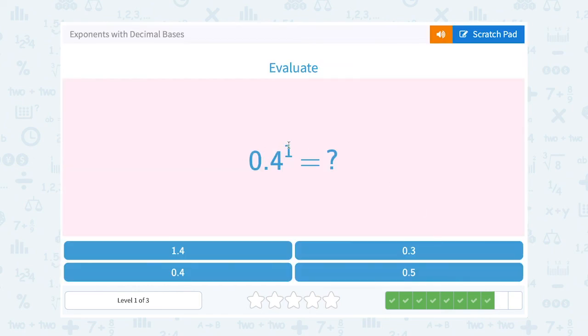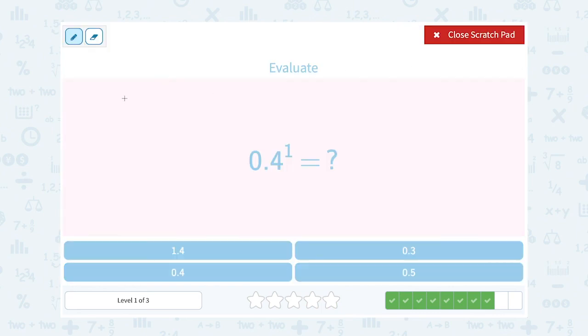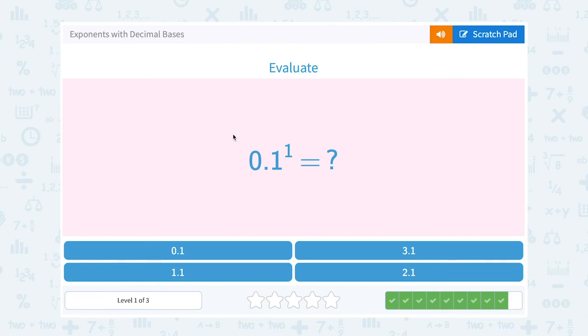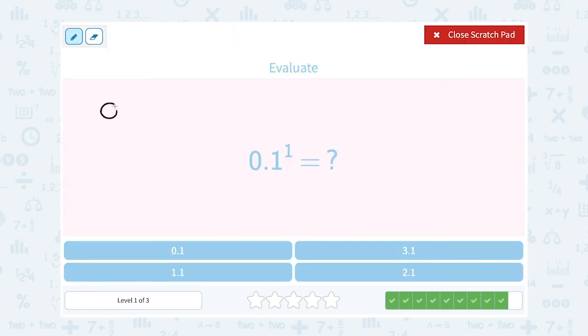0.4 to the first power. Well that means to write 0.4 out one time, so that's just 0.4. 0.1 to the first power. That tells us to just write out 0.1 one time, which is just 0.1.